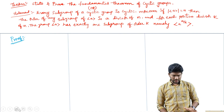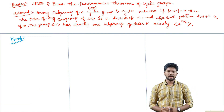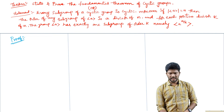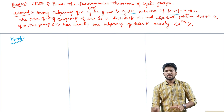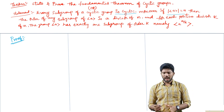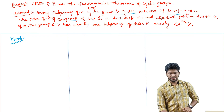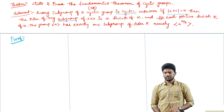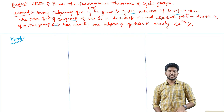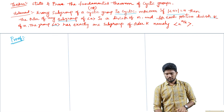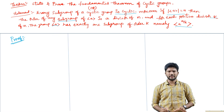State and prove the fundamental theorem of cyclic groups. The statement is: every subgroup of a cyclic group is cyclic. Moreover, if a cyclic group generated by A has order n, then the order of any subgroup of the group generated by A is a divisor of n, and for each positive divisor k, the group generated by A has exactly one subgroup of order k, namely the subgroup generated by A power n by k. This is the statement of this theorem.